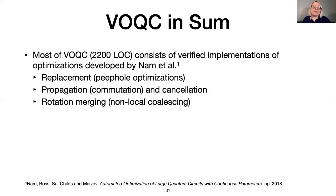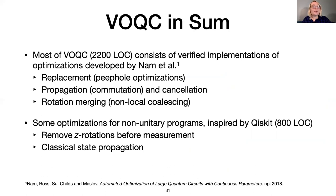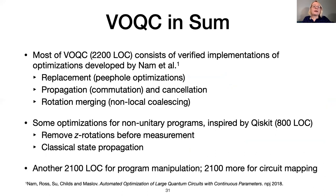Most of VOQC is verified implementations of optimizations from Nam et al., which range from simple peephole optimizations to more interesting non-local optimizations. But we also include a few optimizations over programs that include measurement, to stress test our semantics for full SQUIRE programs. Another 2100 lines of VOQC is reusable, verified functions for manipulating SQUIRE programs. Functions we provide include finding the next gate acting on a qubit, propagating a gate using cancellation and commutation rules, and replacing a sub-program with an equivalent program. Finally, we have 2100 lines for verified circuit mapping transformations.